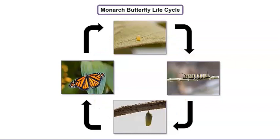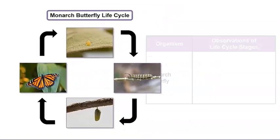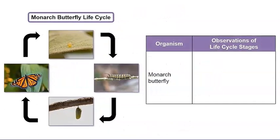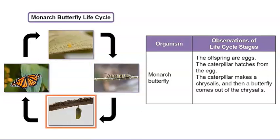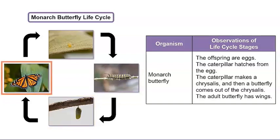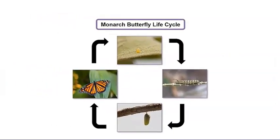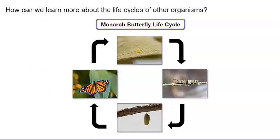What do you observe about the organism at each stage? Let's record our observations in this chart. How does the organism change during its life cycle? The offspring are eggs. The caterpillar hatches from the egg. The caterpillar makes a chrysalis and then a butterfly comes out of the chrysalis. The adult butterfly has wings. This model shows the life cycle of a monarch butterfly. But I wonder, how can we learn more about the life cycles of other organisms?